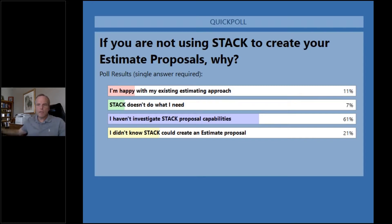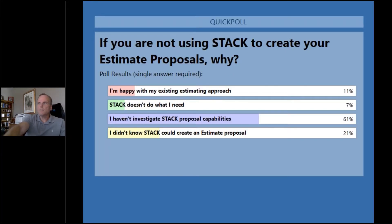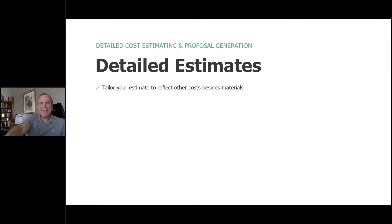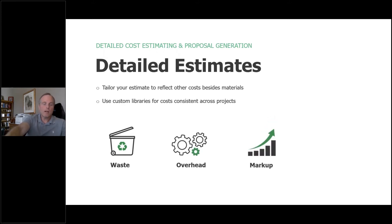We're going to leverage that information to help create some very detailed estimates. We're going to allow you to tailor your estimate to reflect how other costs besides materials are being handled. We'll use those custom libraries to ensure you have consistent costs across your projects, and we'll allow you to define other factors like waste, overhead, markup at an individual or overall perspective, and of course incorporate your sales tax.